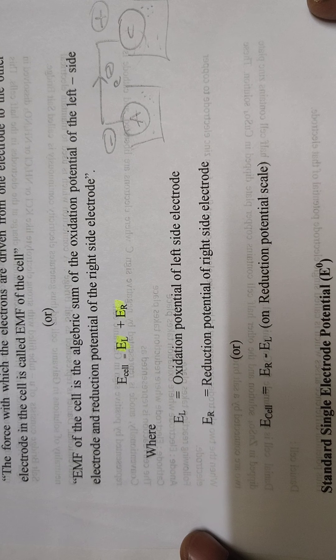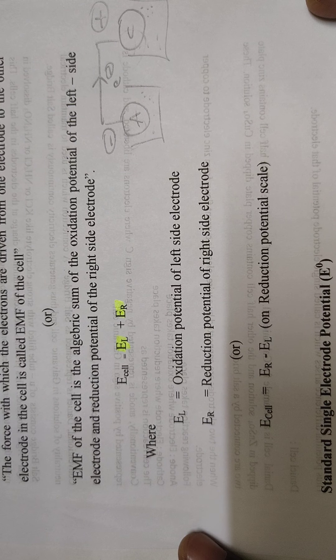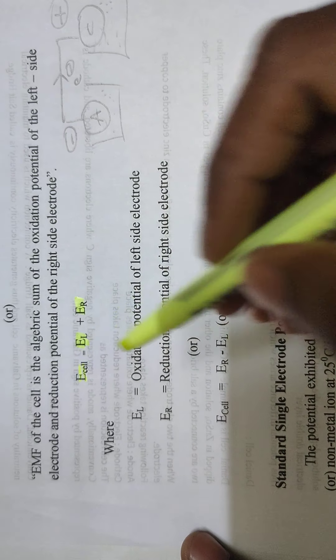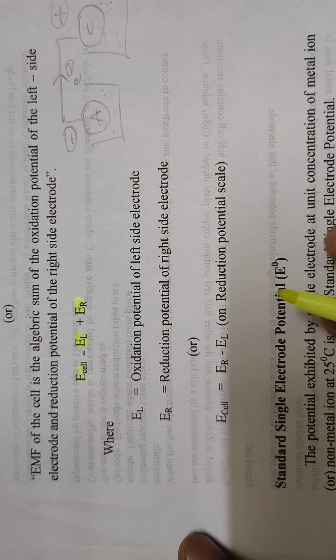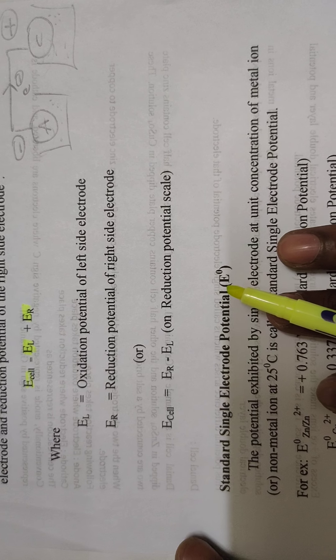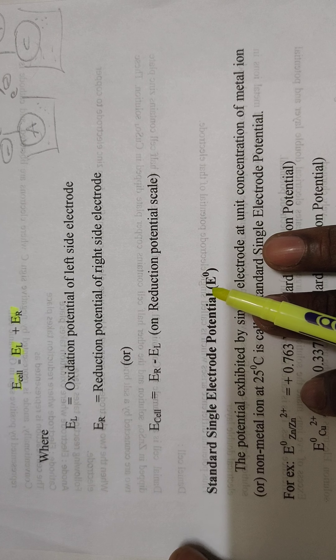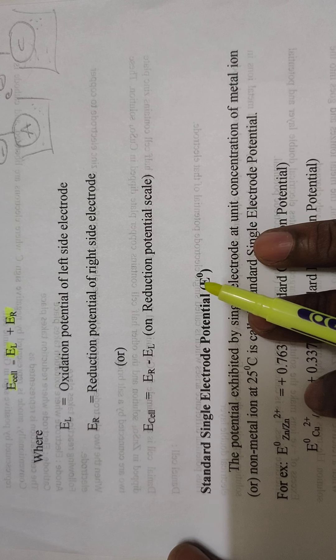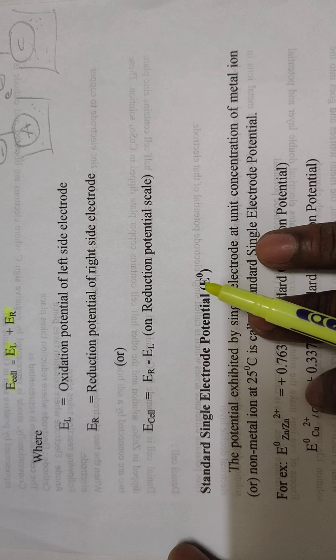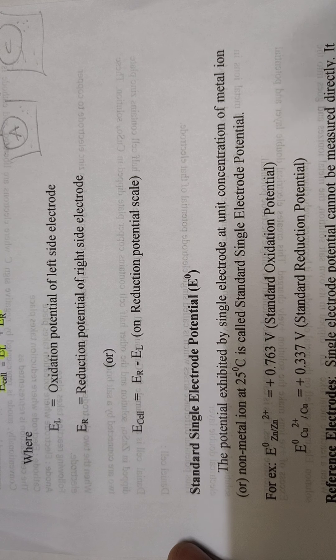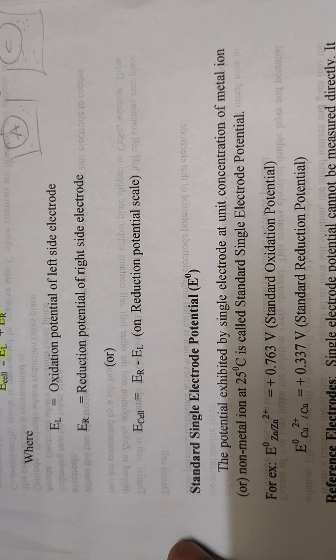What is electromotive force? Electromotive force means the force with which the electrons are driven from one electrode to another electrode. With some force, electrons move from the anodic electrode to the cathodic electrode. A cell is a combination of two half cells, so one electrode acts as anode and another electrode acts as cathode, and these two are connected with a conducting wire.